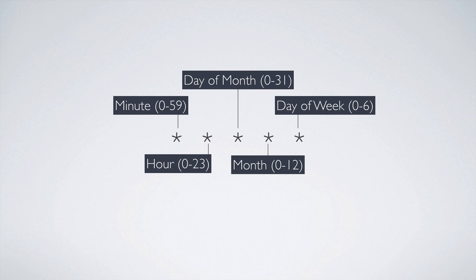The anatomy of a cron schedule looks something like this, where you have five asterisks. Each asterisk can take in a certain value. If it's left as an asterisk, that means it will perform at any point. So with all asterisks, it's going to run every minute of every day of every month. If we were to set the minute to zero, then it would run once an hour at the top of the hour.